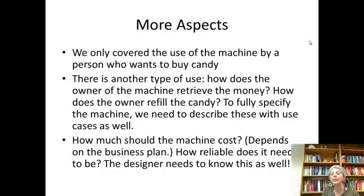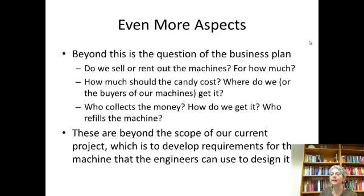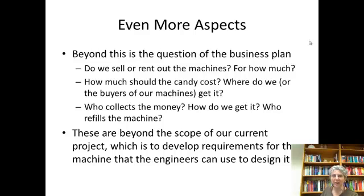Of course there's a lot more to the candy machine — we're only covering the part that deals with the person who wants to buy the candy. What about the owner? How do they get the money? How does the owner refill the candy? Those things would have to be specified too. And then there's the whole business plan: do we rent the machines or sell them, how much does the candy cost, who collects the money — those are beyond our scope. But even for this very simple case, it's more complicated than you might have thought.